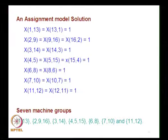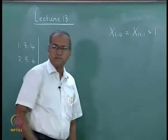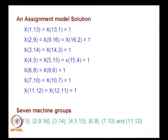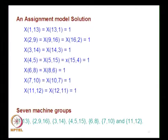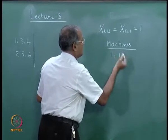Solving the assignment problem gives a solution with x(1,13) = x(13,1) = 1. Looking at the 16 assignments: 1 to 13, 2 to 9, 3 to 14, 4 to 5, 5 to 15, 6 to 8, 8 to 6, 7 to 10, 9 to 16, 10 to 7, 11 to 12, 12 to 11, 13 to 1, 14 to 3, 15 to 4, 16 to 2. Since 1 is assigned to 13 and 13 is assigned to 1, they form a machine group together.